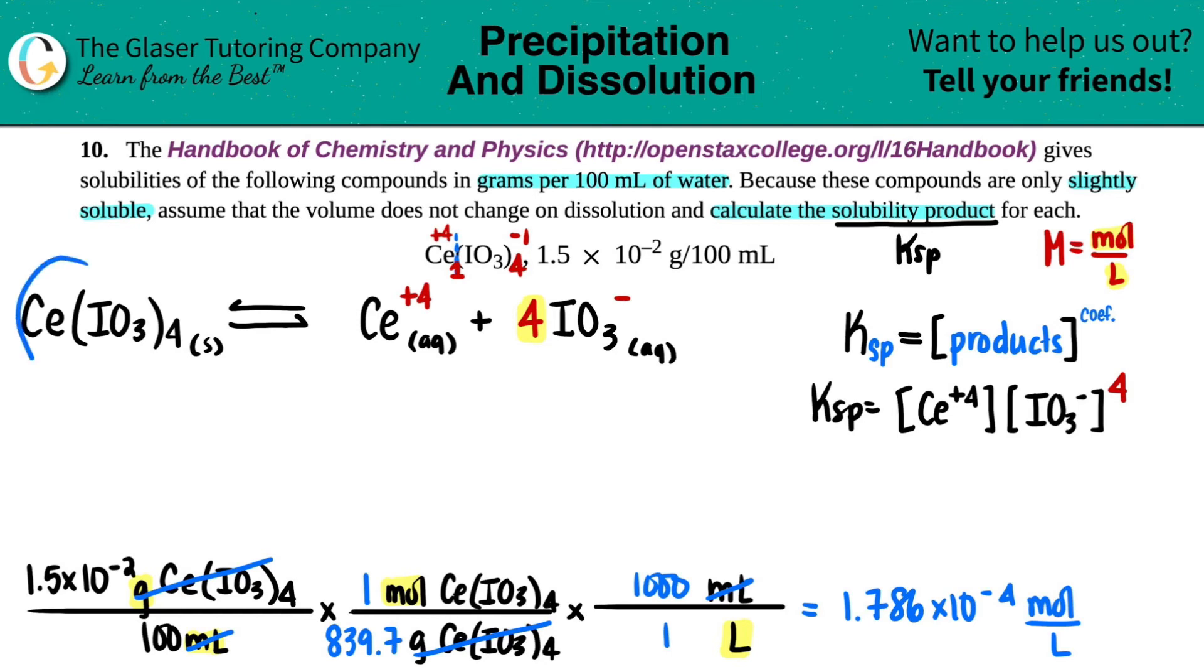This is for the starting material. This is now that concentration, 1.786 times 10 to the negative fourth molarity. From here, I could find out what the concentration of these two ions are by looking at their mole ratios. There was one of the whole compound here and one Ce. So if these are the same numbers, that means this would be the same for the Ce. 1.786 times 10 to the negative fourth molarity.